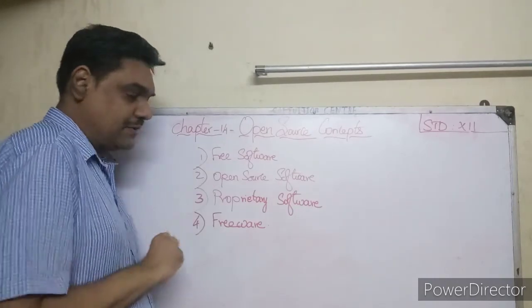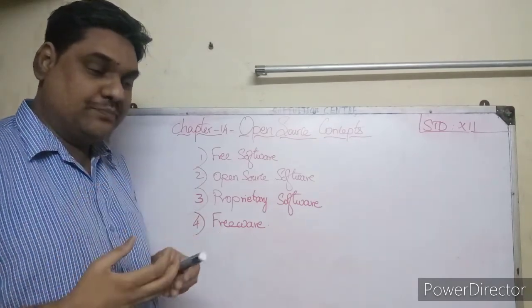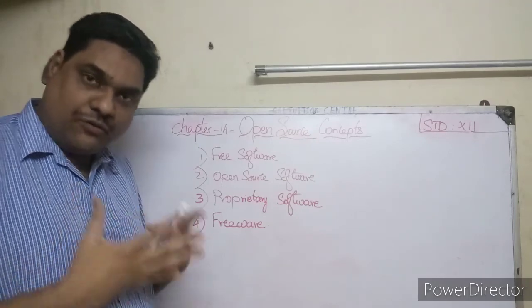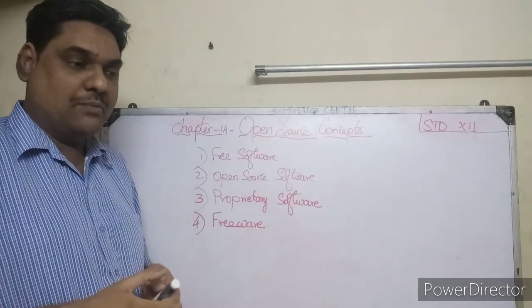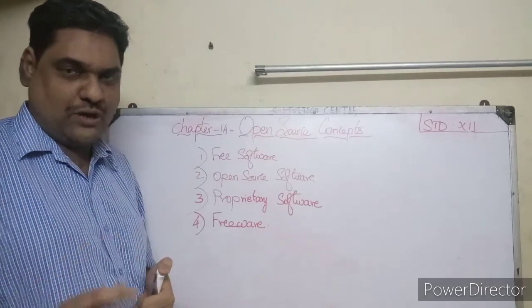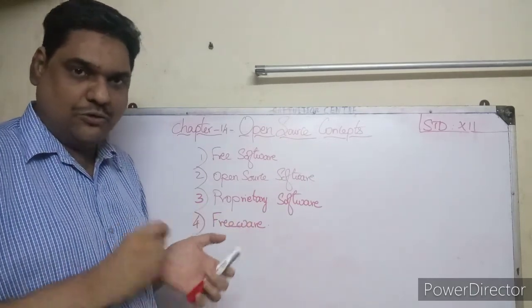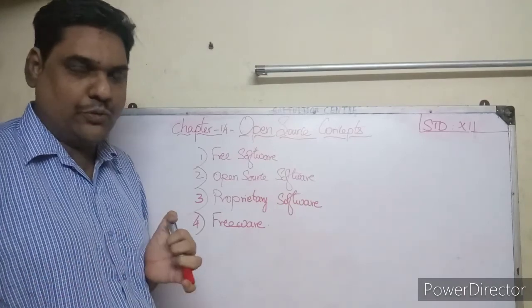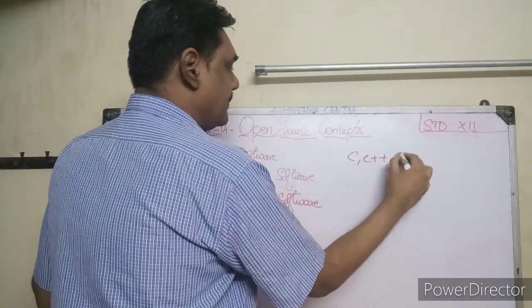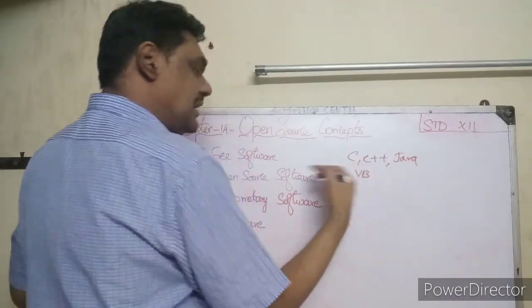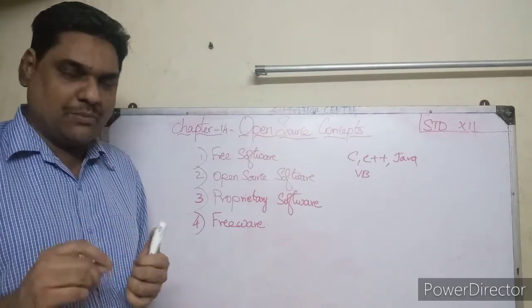Free software — when a company creates software, the software has a source code. Actually, when the program is written, software is nothing but a group of programs. And the programs are written in a programming language, a computer language — for example, C, C++, Java.